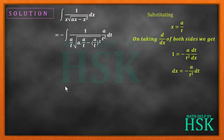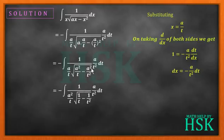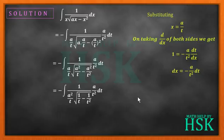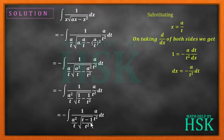Taking a squared common, we get a outside, so the a squared terms cancel out. The t and t squared terms also cancel. On taking LCM inside the square root, we get square root of (t minus 1) upon t squared. Writing it outside the radical sign, we get only t, so the t and t squared cancel out.